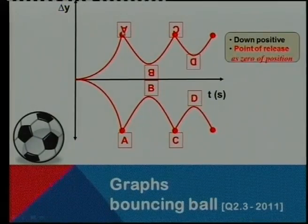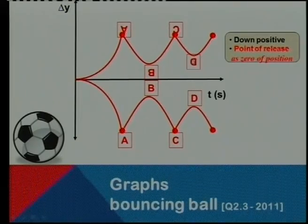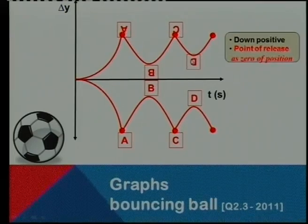So this is now the downward position. That is bounce number one, bounce two, so D was the maximum height. That is correct.